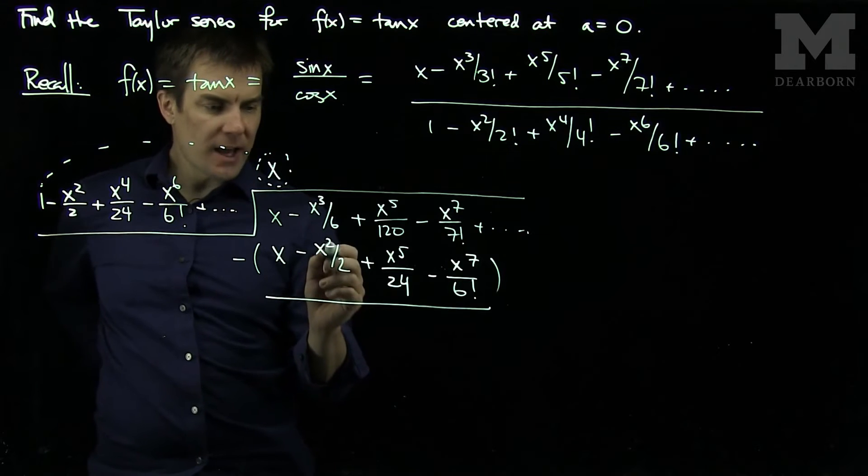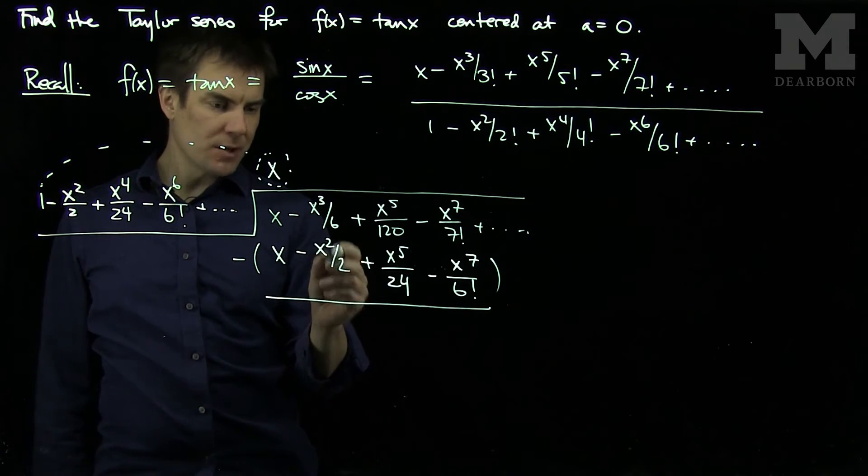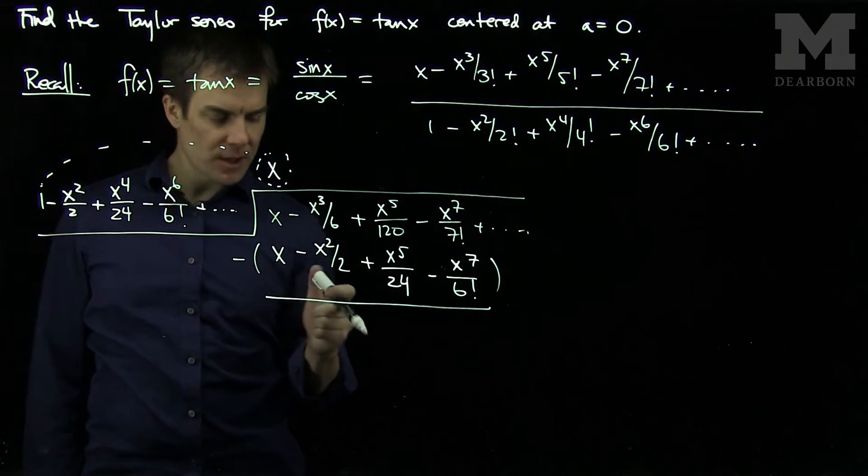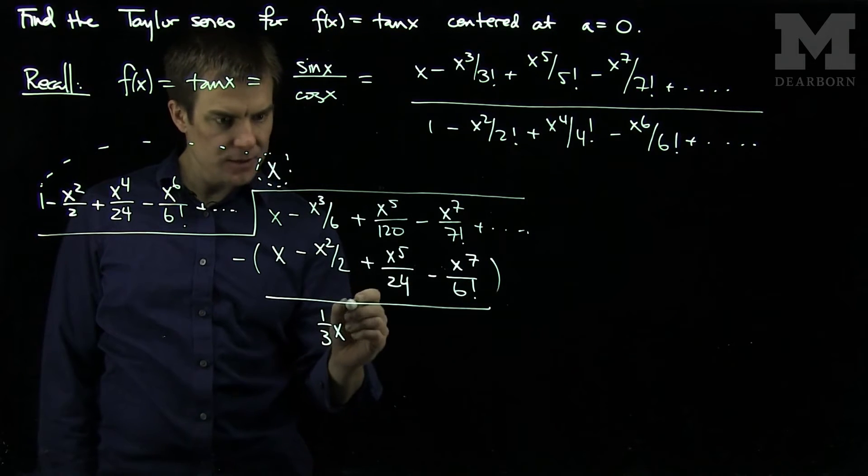The x will cancel out. Then we'll have a positive 1 half minus a sixth. So positive 1 half is 3 sixths minus 1 sixth. That's going to be 2 sixths, which is 1 third. So it's going to be 1 third x cubed.